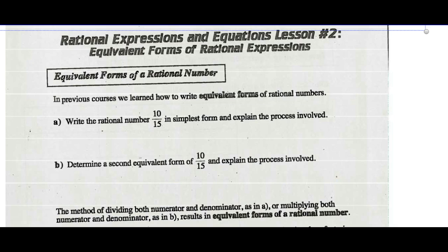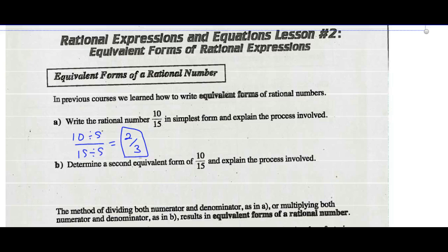In previous courses we learned how to write equivalent forms of rational numbers. Write the rational number 10/15 in simplest form. We want to find a factor of the numerator and denominator that is common to both. The highest factor common to both is 5, so if I divide the numerator and the denominator both by 5, I end up with 2/3. That is a rational number in lowest terms. As long as you do the same thing to the numerator as you do the denominator, we can simplify a rational number.